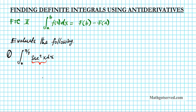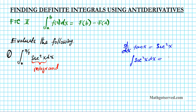In this case, secant squared x is your integrand. So the question is, do you know of any function that you can differentiate to get secant squared x? If you remember your differentiation tables, you remember that the derivative of tan x is equal to secant squared x. So the derivative of tan x is equal to secant squared x. This tells me that the integral of secant squared x dx is equal to tan x plus some constant, because if I differentiate any constant I'll get 0, and the derivative of tan x is secant squared x.